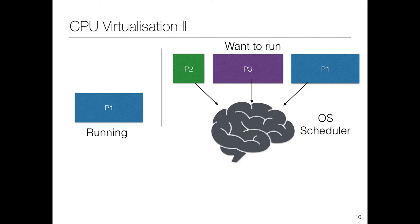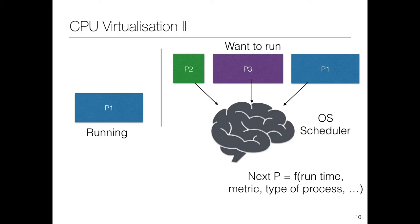What will that policy look like? It takes as input the runtime of different processes. One policy might say run the smallest program; another might say run the program which requires the least input/output. The policy can also maximize for different metrics — for example, the average running time of all processes, or how quickly a program is first executed, called response time. We might also consider the type of processes — whether to execute all I/O processes or all CPU-intensive processes first. We'll go into details in the next few lectures.